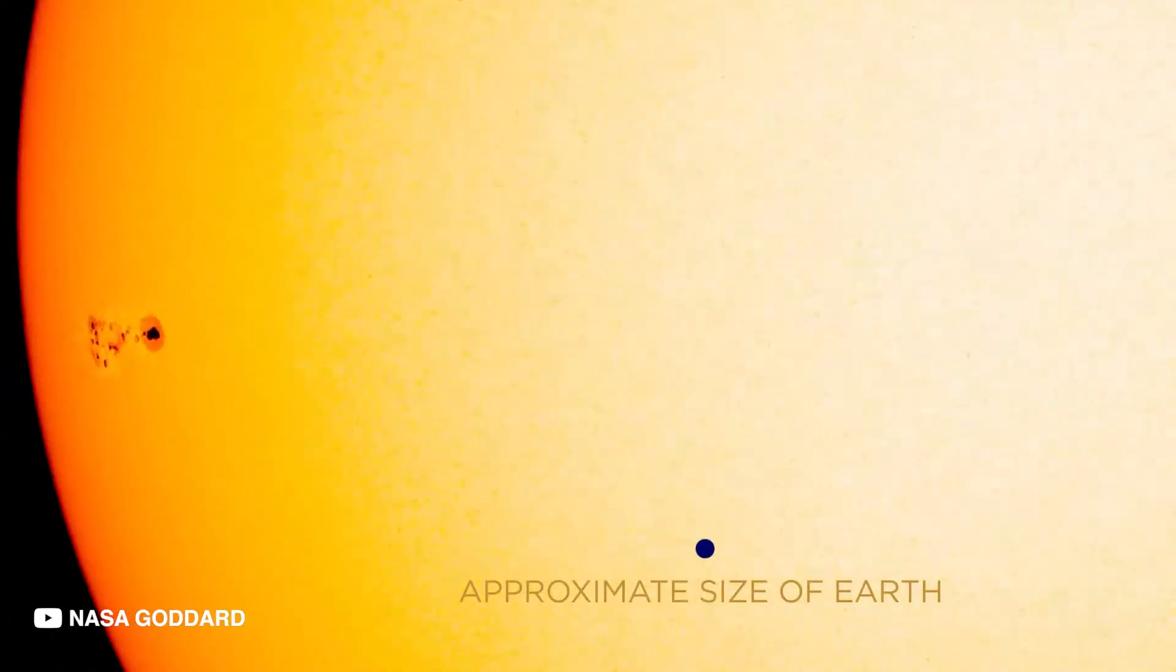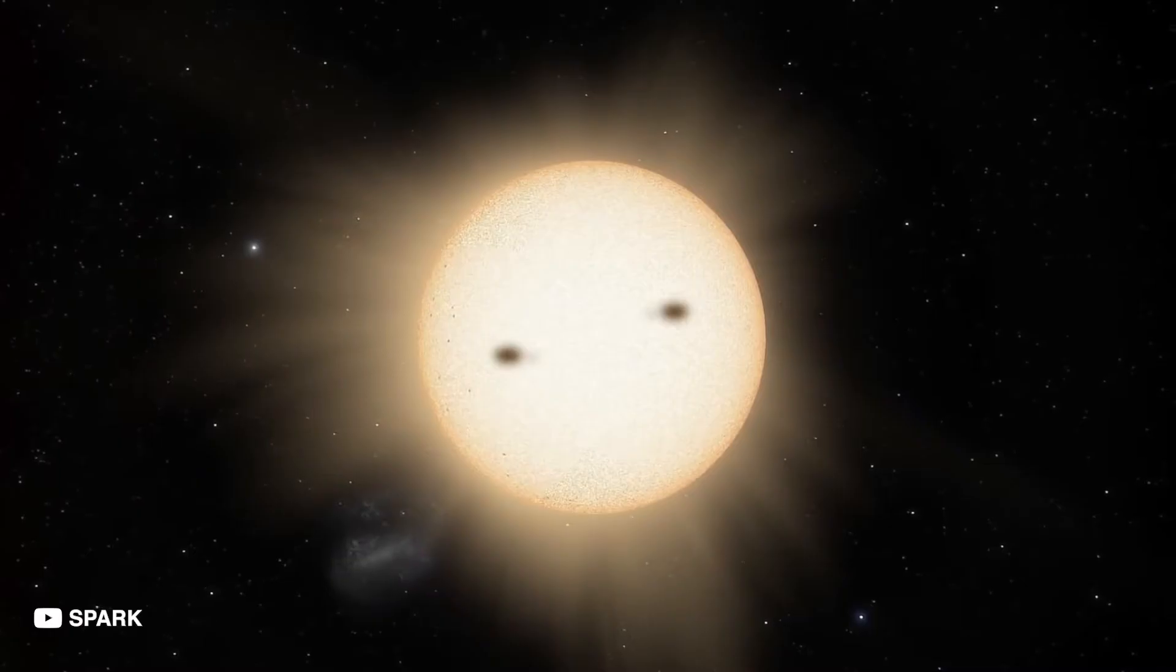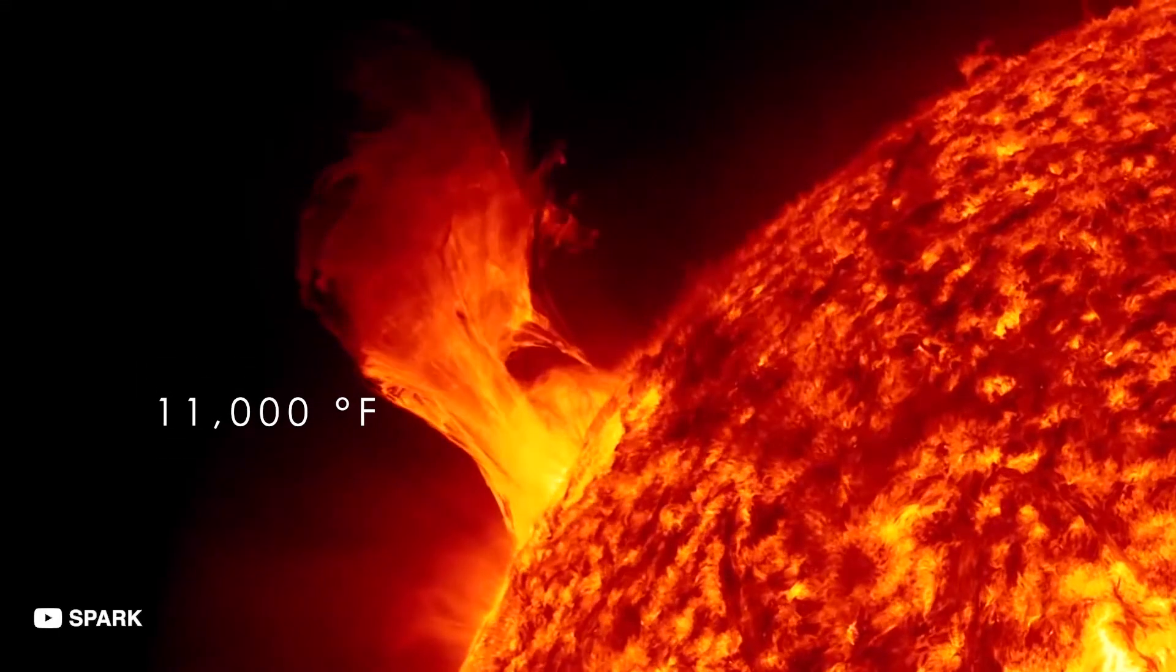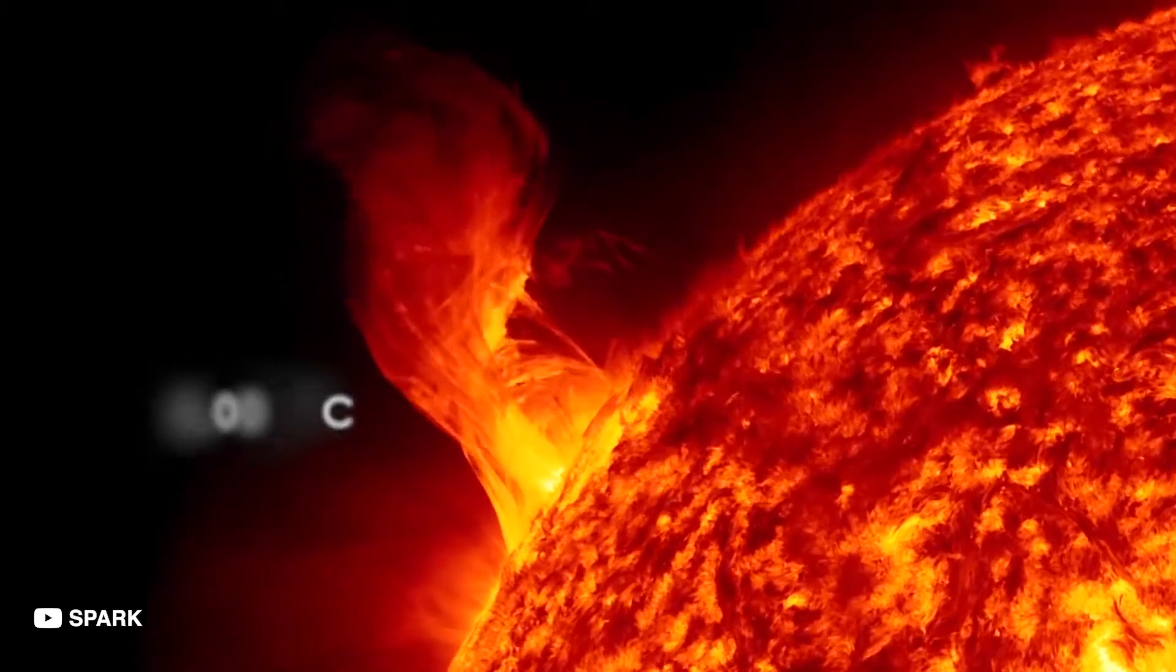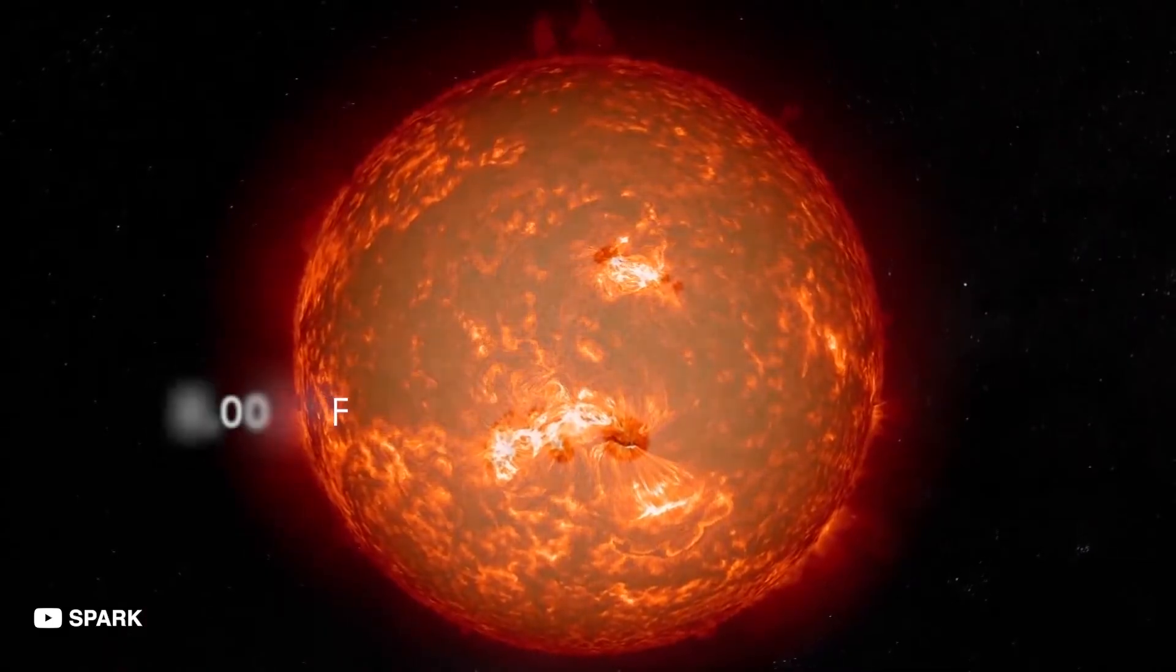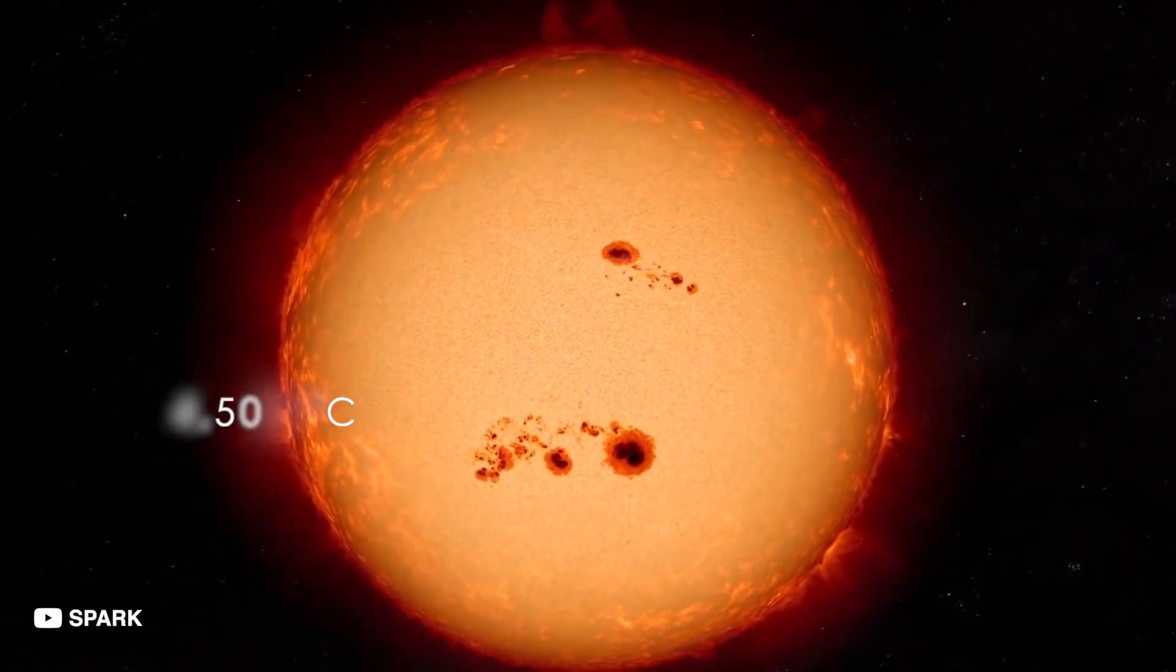Sunspots are dark areas on the surface of the Sun which form when fluctuations occur in the Sun's magnetic field. The spots are dark because they are significantly cooler than any other parts of the solar surface. But cooler is a relative term in this case. The Sun is 11,000 degrees Fahrenheit or 6,000 degrees Celsius. In contrast, a piping hot sunspot will be about 8,000 degrees Fahrenheit or 4,500 degrees Celsius.